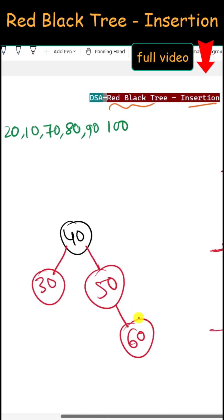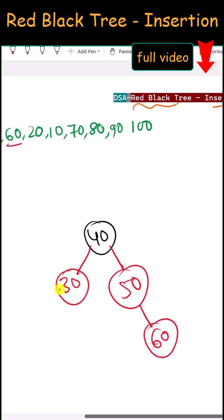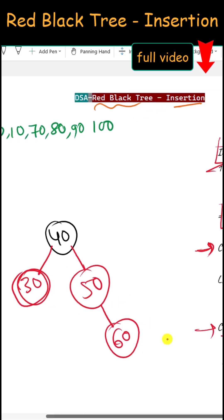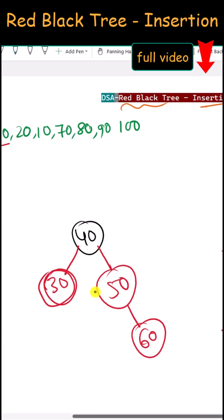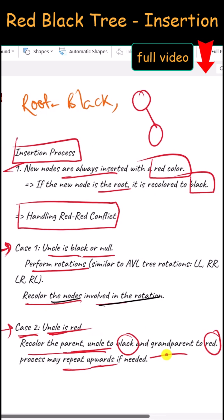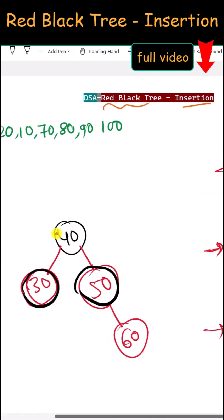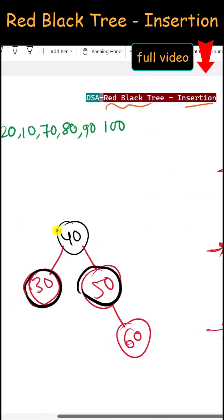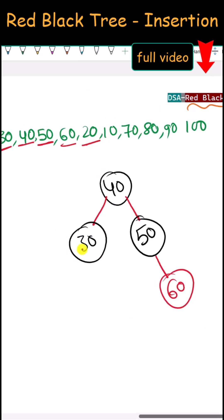Next we insert 60, placed here, and again we have a red-red conflict. This time we have a red uncle, so it is case 2. The parent and uncle become black, and the grandparent should become red, but because it is the root node it stays black.